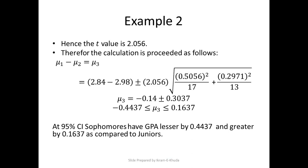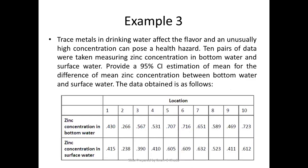Plugging in t equals 2.056, we finally get the interval which ranges from minus 0.4437 to 0.1637. At the 95% confidence interval, sophomores have a GPA lesser by 0.4437 and greater by 0.1637 compared to juniors. The minus sign indicates mu1 is less than mu2, meaning GPAs of sophomores are less than GPAs of juniors, while the plus sign indicates GPAs of sophomores are greater than those of juniors.